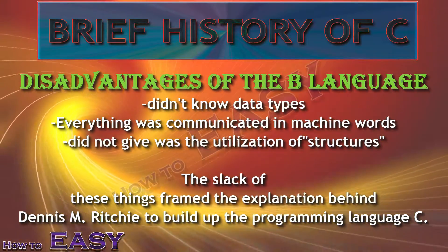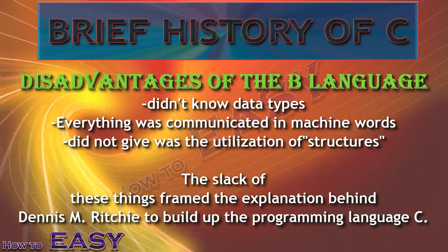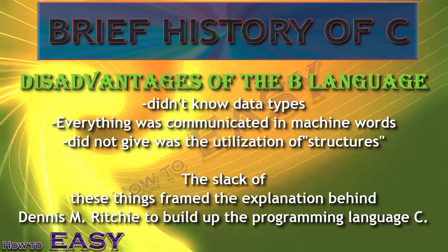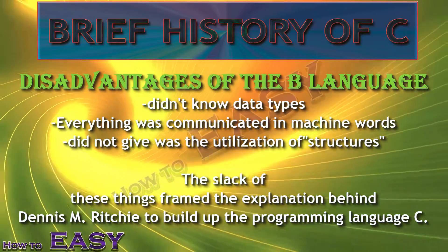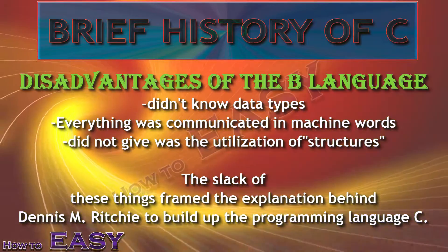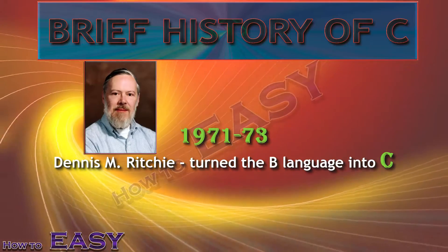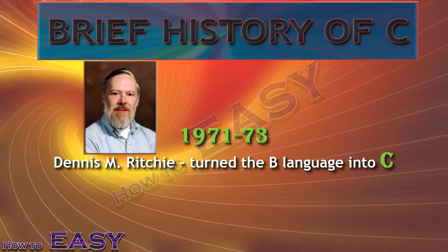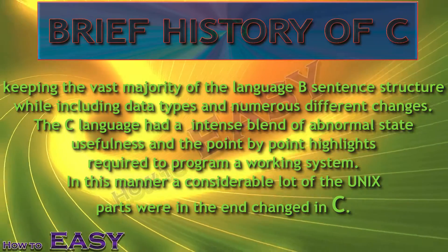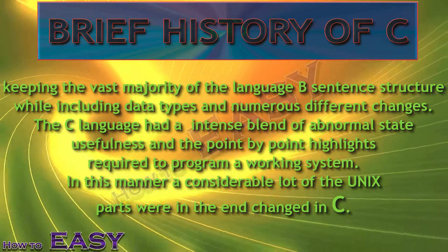A disadvantage of the B language was that it didn't know data types — everything was expressed in machine words. Another functionality that the B language did not provide was the use of structures. This lack of these things formed the reason for Dennis M. Ritchie to develop the programming language C. In 1971-73, Dennis M. Ritchie turned the B language into the C language, keeping the vast majority of the B language syntax while adding data types and numerous other changes.